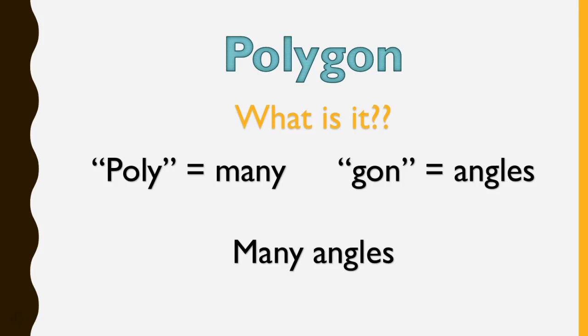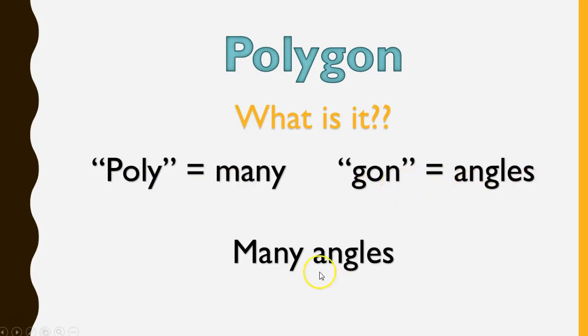What is that word? Well, poly means many and gon means angles. So together it means a shape of many angles.